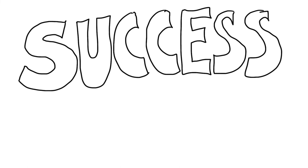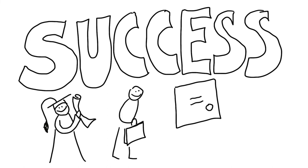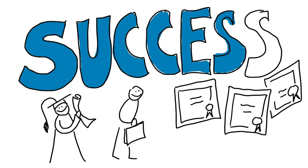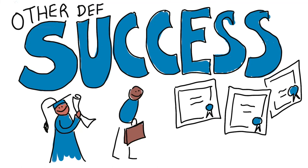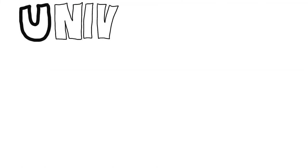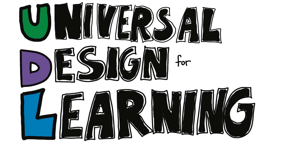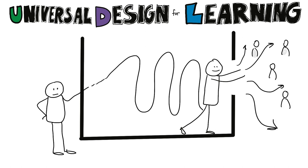In our linear semestered and credentialed post-secondary system, success in a program is often defined narrowly as graduating on time, getting an entry-level job in the field, or pursuing further formal education. But this is not the definition of success for everyone. There is much more work that needs to be done at a system's level to welcome other definitions of success. At the course and program levels, however, we can use the UDL framework to promote multiple pathways and entry points into the curriculum to allow students to achieve what they want from their learning experience.